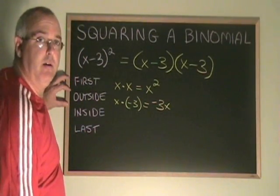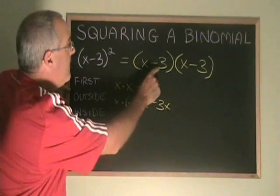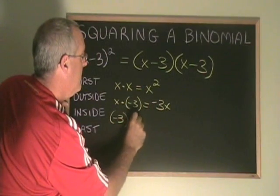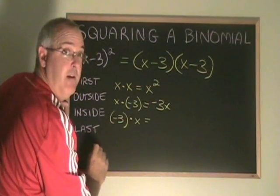The inside terms are this negative 3 and this x. Negative 3 times x gives another negative 3x.